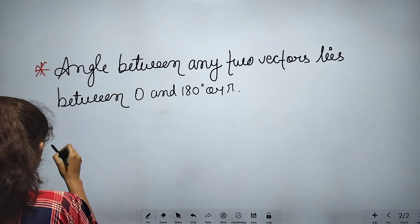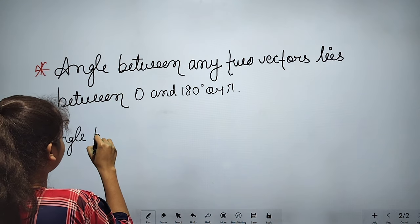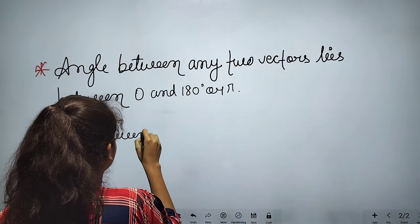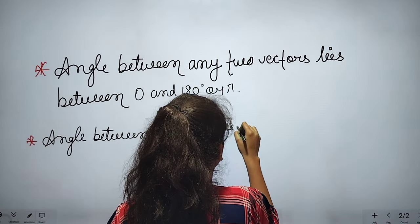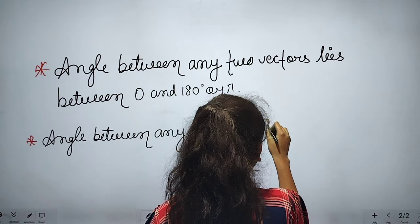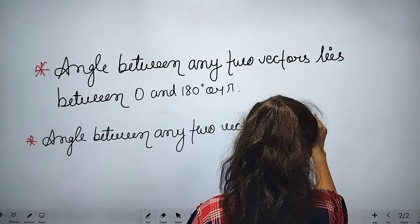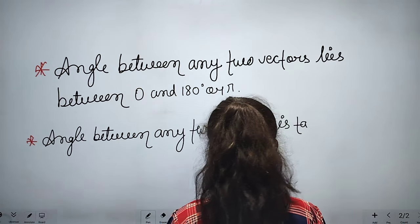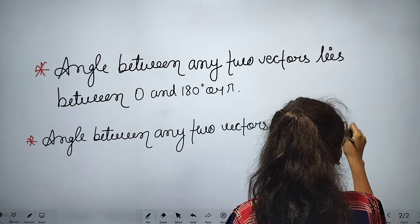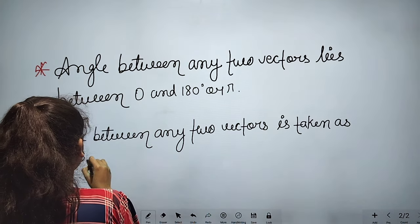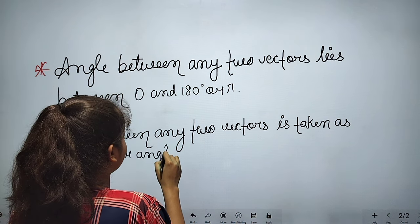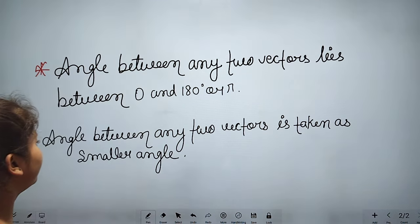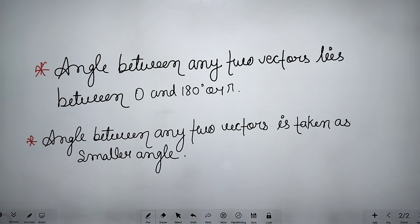The next point is: the angle between any two vectors is always taken as the smaller angle.